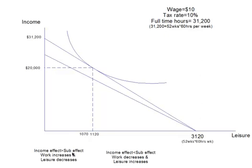The substitution effect says that now every hour of leisure you take only lets you keep $9 instead of $10. The cost of taking leisure time is lower, so you work less. On the left side of the original point, the income effect is greater than the substitution effect. On the right side, the income effect is less than the substitution effect, so you work less and take more leisure time.